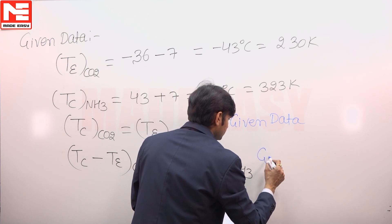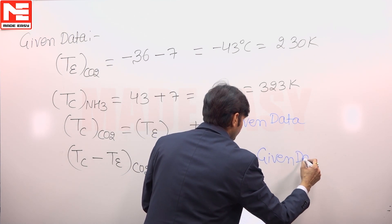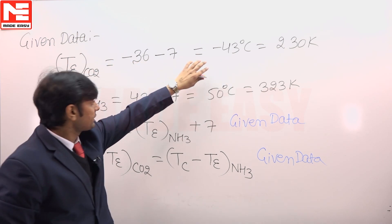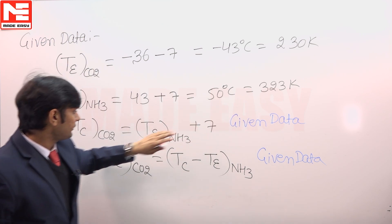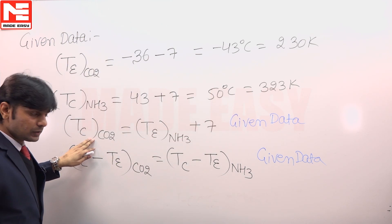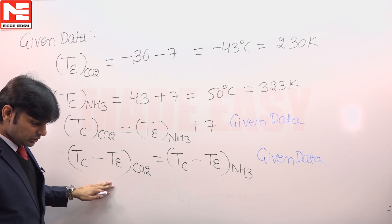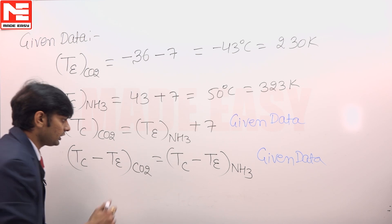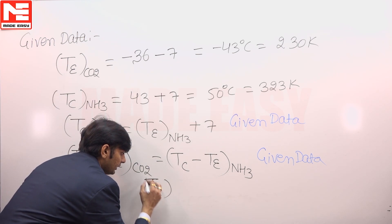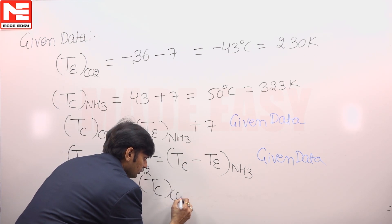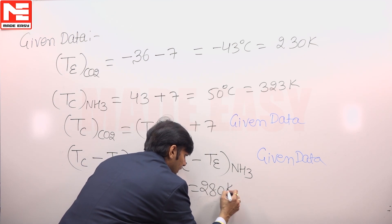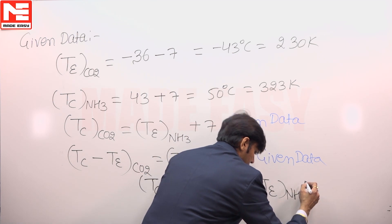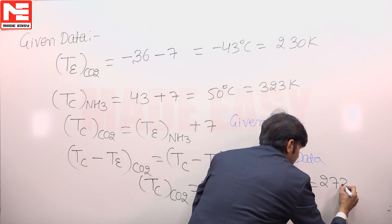The lift — condenser minus evaporator — for CO2 is equal to condenser minus evaporator for ammonia. These are equal as given. By using the evaporator temperature of CO2 as 230 Kelvin and the condenser temperature of ammonia as 323 Kelvin and applying this expression, the final values are: condenser temperature for CO2 is 280 Kelvin and evaporator temperature for ammonia is 273 Kelvin.